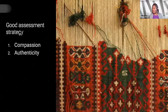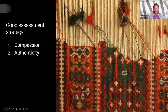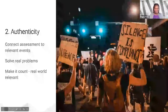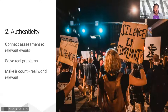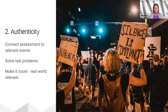Next up is authenticity. Students should know how the content connects with events or world situations from the real world. The goal should be to make the learning relevant to what they see, hear, and interact with in the world. It helps drive their desire to learn when they know the content is relevant and has currency to what's happening around them. Think about how the content is relevant to what they would actually do on the job.